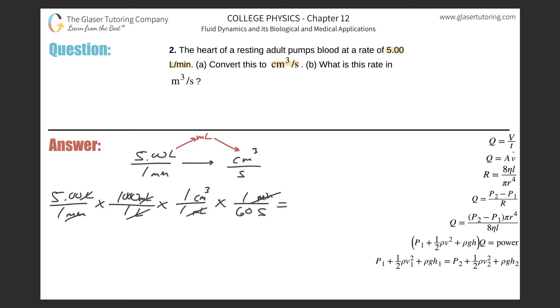So this is 83.3 cubic centimeters per second. That takes care of letter A. Now letter B says: what is this rate in cubic meters per second? Let's take the value we have here and convert it to cubic meters per second.